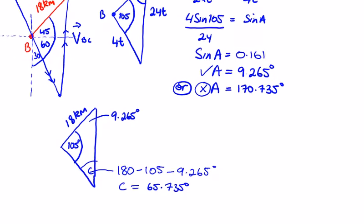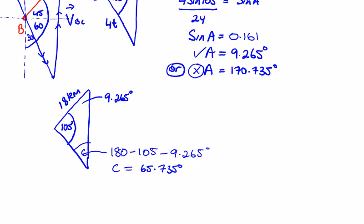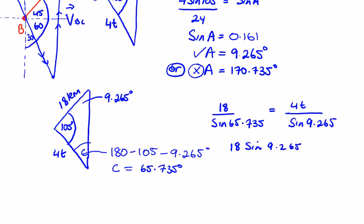Where is my distance? I have 18 kilometers here. We're dealing with kilometers in this question, so we can say here that 18 over the sine of the angle opposite, which is my new angle 65.735, and take one of the t's - we had a 4t here, so I'll take that one. It's going to be equal to 4t divided by the sine of 9.265. Cross multiplying, we're going to get 18 sine 9.265 is equal to 4t sine 65.735.